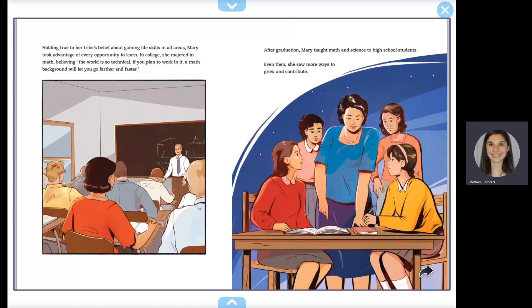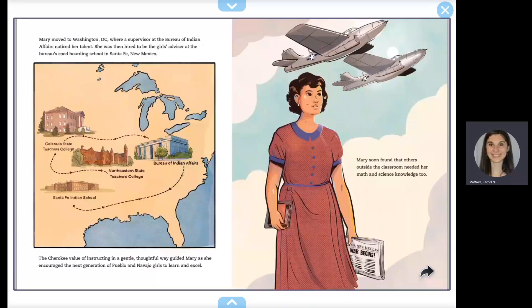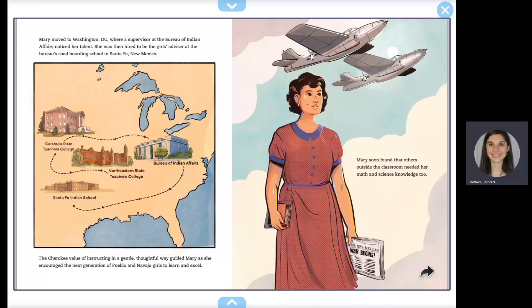Mary moved to Washington, DC, where a supervisor at the Bureau of Indian Affairs noticed her talent. She was then hired to be the girls' advisor at the Bureau's co-ed boarding school in Santa Fe, New Mexico. The Cherokee value of instructing in a gentle, thoughtful way guided Mary as she encouraged the next generation of Pueblo and Navajo girls to learn and excel.